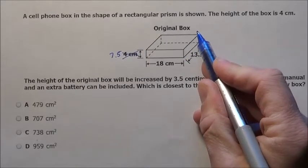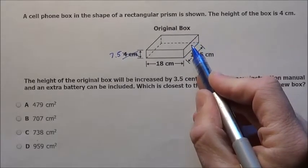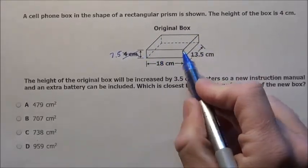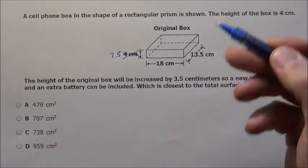13.5 by height of 7.5 and then double it because you have this side and that side. And then this very big part, the top of the box and the bottom which are 18 by 13.5 and then double it.